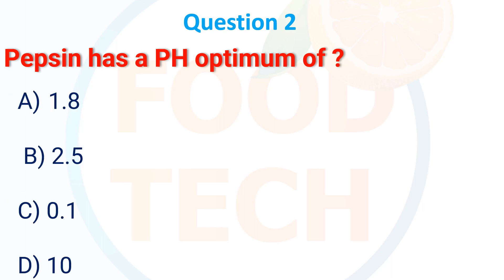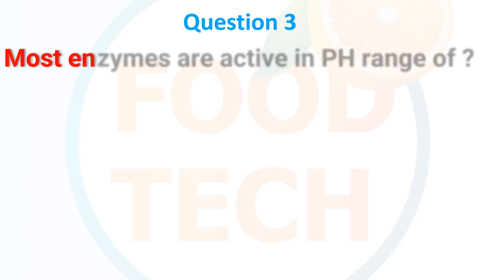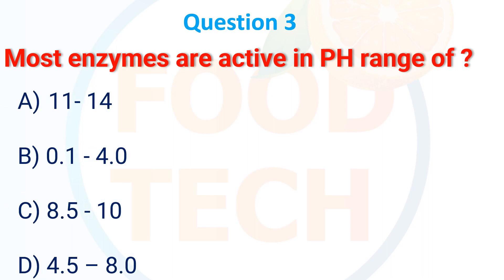Pepsin has a pH optimum of: A. 1.8, B. 2.5, C. 0.1, D. 10. The answer is A. 1.8. Most enzymes are active in the pH range of: A. 11 to 14, B. 0.1 to 4.0, C. 8.5 to 10, D. 4.5 to 8.0. The answer is D. 4.5 to 8.0.